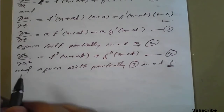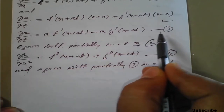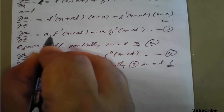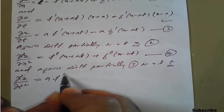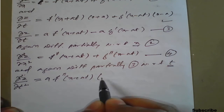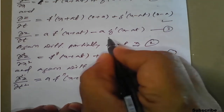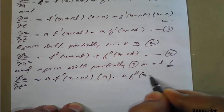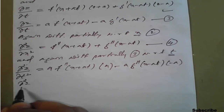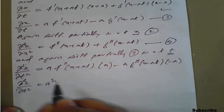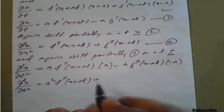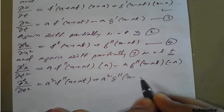Now differentiating Equation 3 partially with respect to t: ∂²z/∂t² = a · f''(x + at) · (a) + (-a) · g''(x - at) · (-a). On simplification, this becomes ∂²z/∂t² = a²·f''(x + at) + a²·g''(x - at).